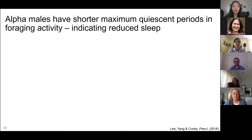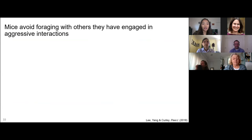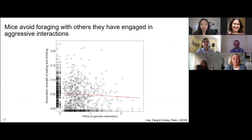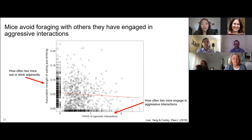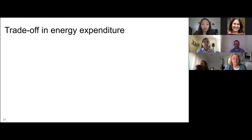We also looked at how long the longest period of inactivity in eating or drinking was, and alpha males have the shortest period between foraging bouts, suggesting they have reduced sleep in general. Further, we used social network analysis to compare networks of foraging behavior and aggressive interaction. The y-axis represents how often mice engage in aggressive interaction and the x-axis represents how often two mice forage next to each other. There is a negative association between these two network measures — mice avoid foraging with others they have had aggressive interactions with. Investing metabolic energy comes with costs and requires corresponding adjustments in behavior and physiology, as animals have limited energy and must show trade-offs.